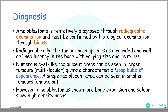The diagnosis is tentatively made through radiographic examination and confirmed by histological biopsy. Radiographically, ameloblastoma appears as a rounded and well-defined lucency in the bone with varying size and features. A single radiolucent area is seen in smaller, unilocular tumors, but numerous cyst-like radiolucent areas are seen in larger, multilocular tumors, giving a characteristic soap-bubble appearance. These ameloblastomas show more bone expansion and seldom show high-density areas.